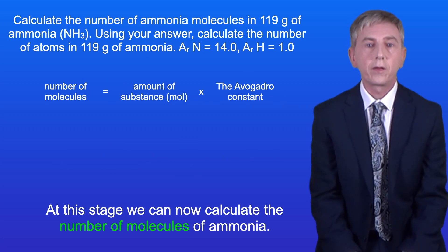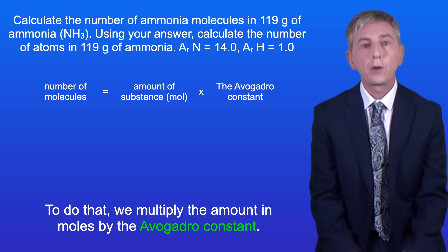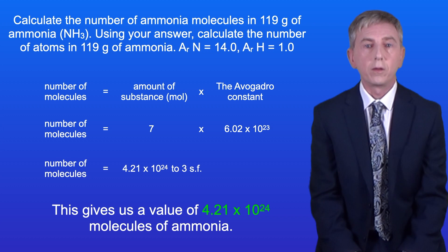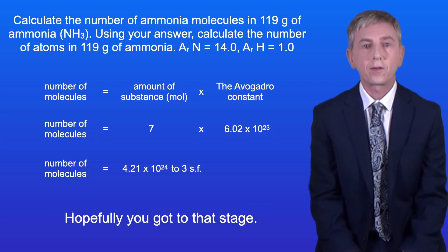Okay, at this stage we can now calculate the number of molecules of ammonia, and to do that we multiply the amount in moles by the Avogadro constant. This gives us a value of 4.21 times 10 to the power of 24 molecules of ammonia. Okay, now hopefully you got to that stage.